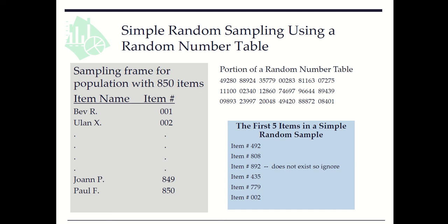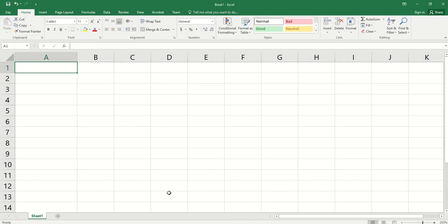Or we can use Excel random number generator. We can use RANDBETWEEN 1 and 850. We can use 1 as the lower bound, 850 as the upper bound. We have 837.